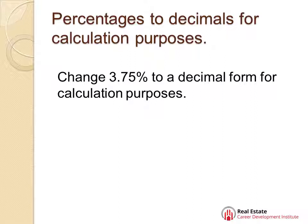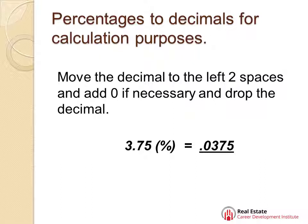Percentages to decimals for calculation purposes. Change 3.75% to a decimal form for calculation purposes. Move the decimal to the left two spaces, add a zero if necessary, and drop the decimal. So, 3.75% equals .0375.